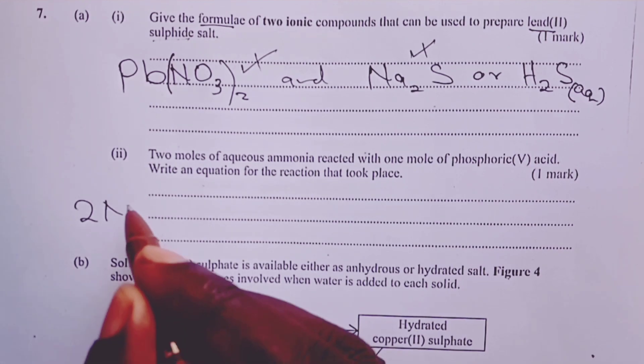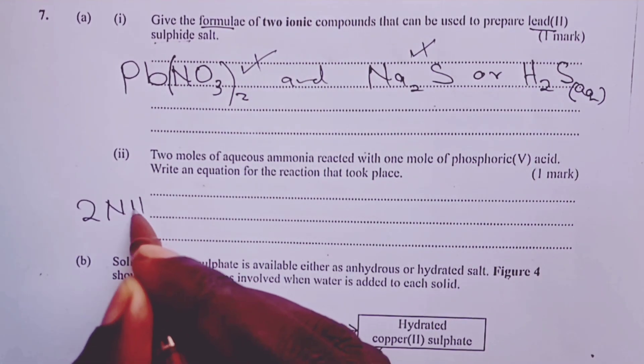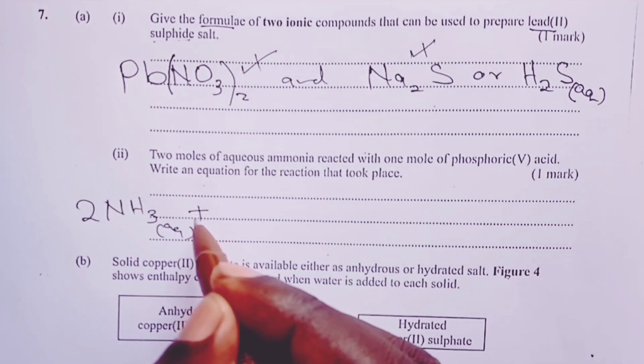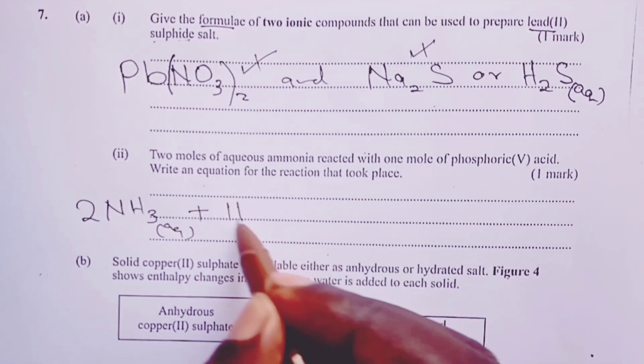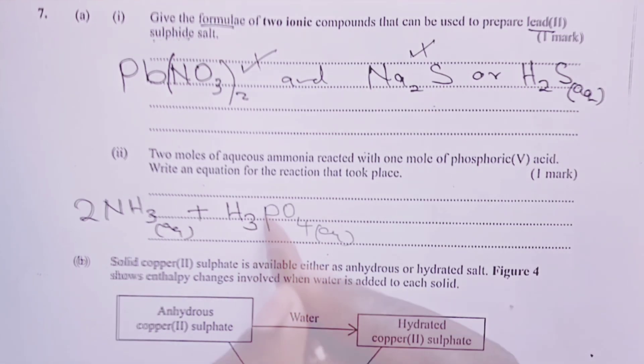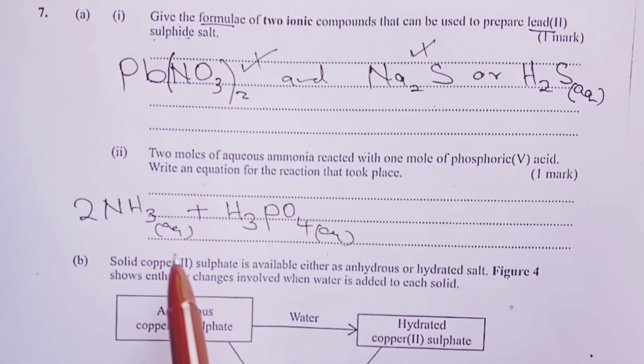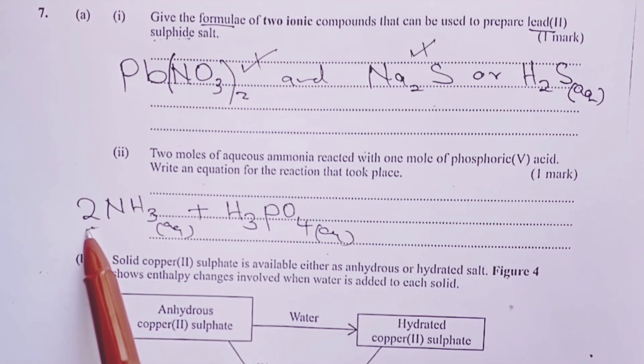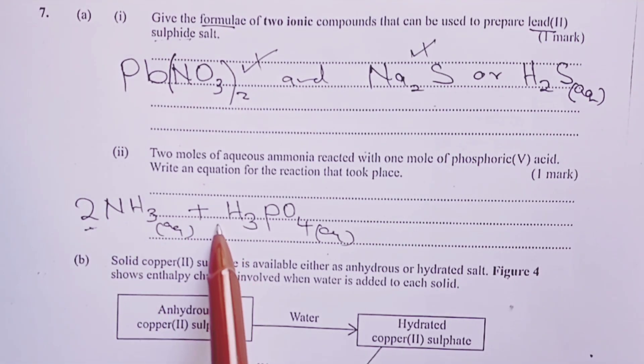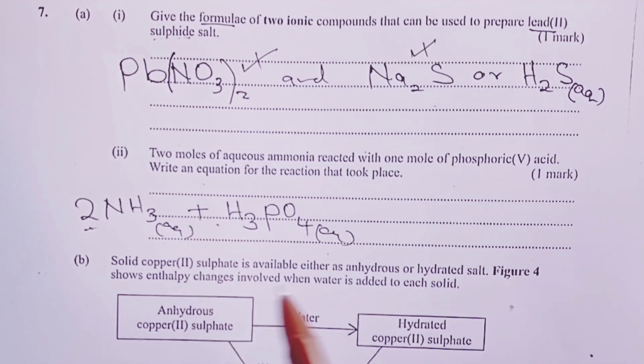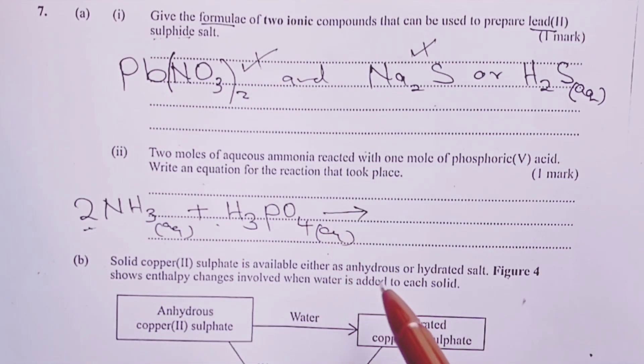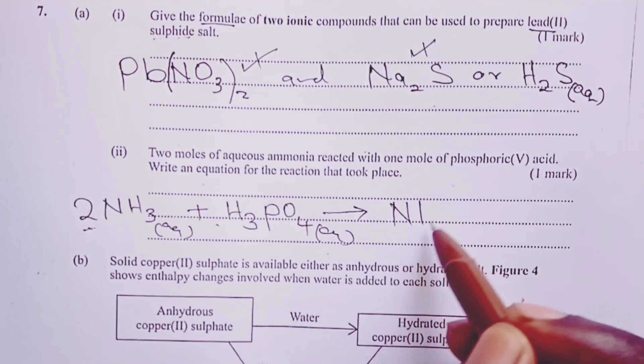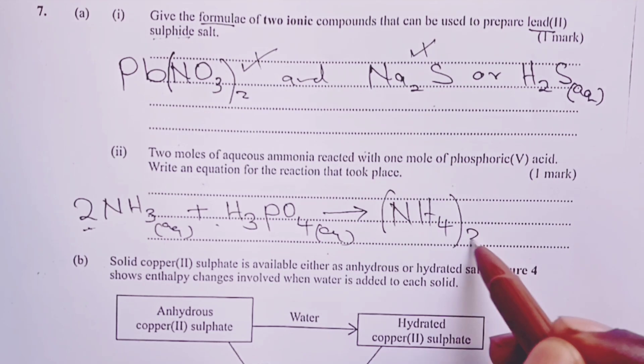So we would have two moles of aqueous ammonia, 2NH3(aq), reacting with only one mole of phosphoric(V) acid, H3PO4(aq). The question is strictly asking us to use two moles of aqueous ammonia and only one mole of our phosphoric(V) acid.